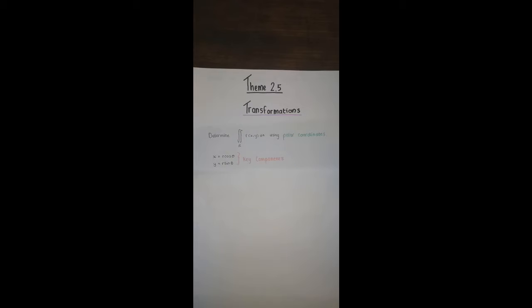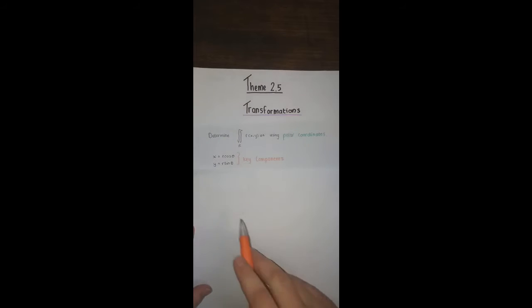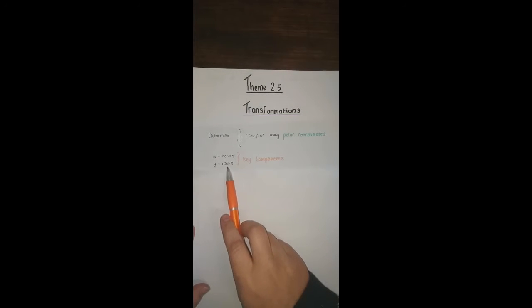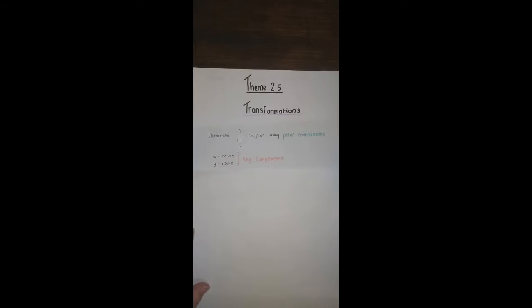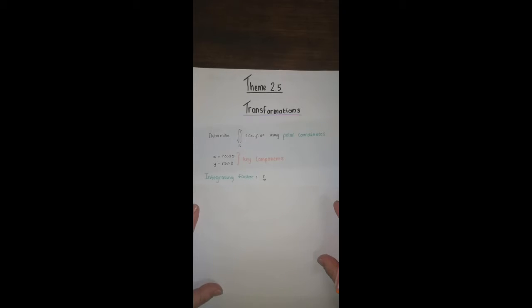If we determine a certain integral using polar coordinates, we know that x equals r cos theta and y equals r sin theta. Our integrating factor is r. How did we get to r? The answer is by using the Jacobian.